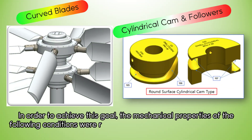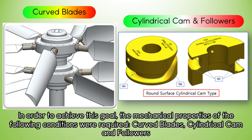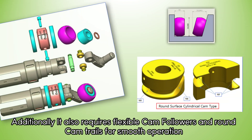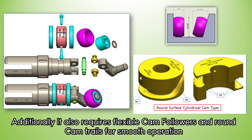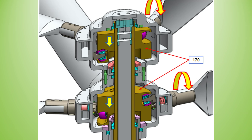In order to achieve this goal, the mechanical properties of the following conditions were required: curved blades, cylindrical cam, and followers. Additionally, it also requires flexible cam followers and round cam trails for smooth operation.